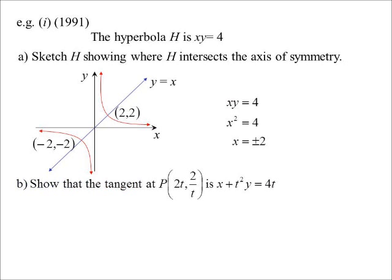Part B, then, show that the tangent is this particular expression. So, we're using our parametric coordinates. In this case, remember, XY equals C squared when we're thinking about the parameter. So, C would be 2. So, our parametrics are 2T, 2, 1 over T.